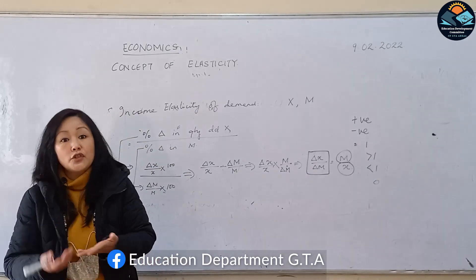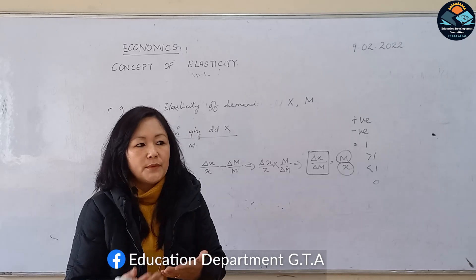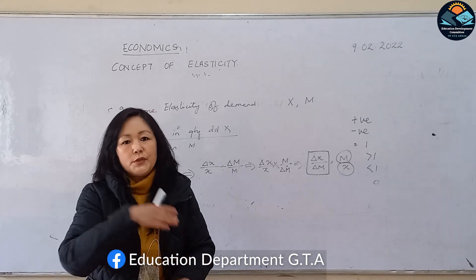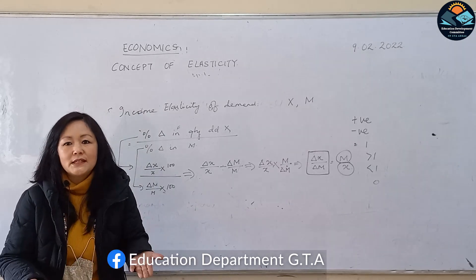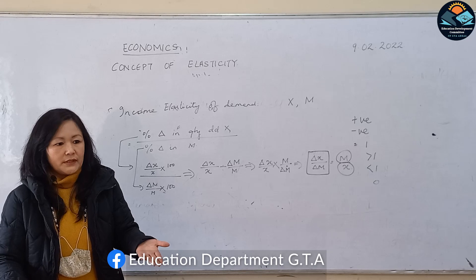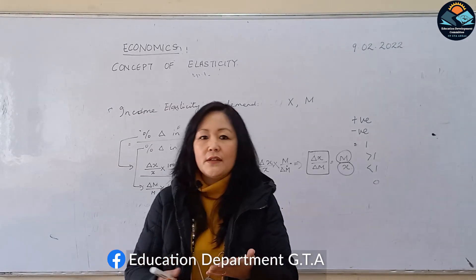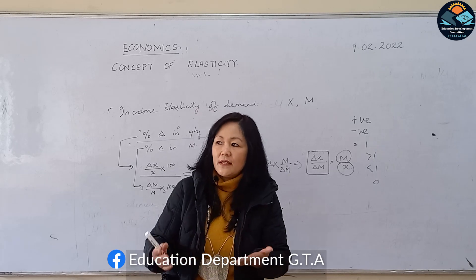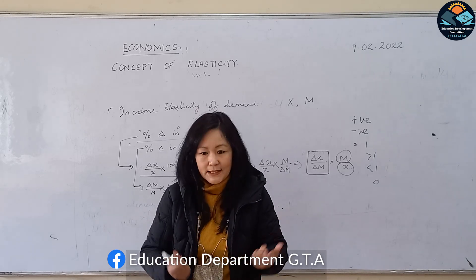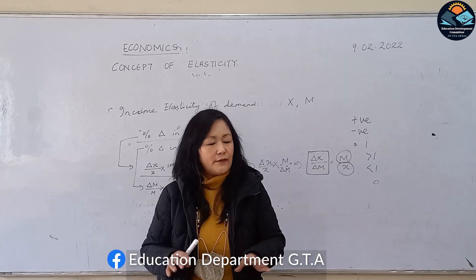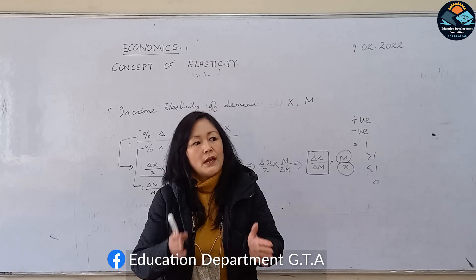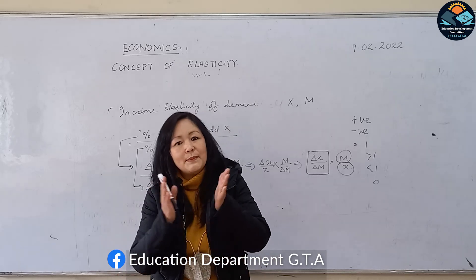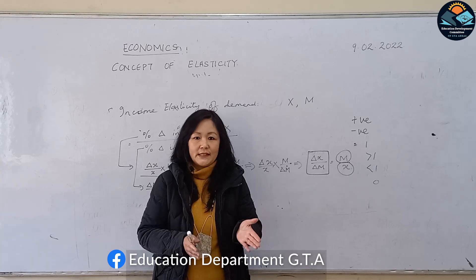In case of luxuries — those commodities which you demand when you have extra income, after spending on necessities — your elasticity of demand is greater than 1. If there is an increase in income by 1%, your increase in demand for luxuries will be greater than 1%. In case of necessities like medicines or daily food supplies, your income elasticity will be less than 1: if income changes by 1%, the change in demand will be less than 1%.